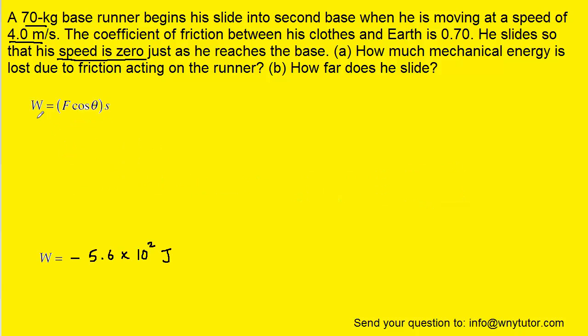For part B of the question, we can recall that the net work done on an object will equal the net force multiplied by the cosine of an angle, which we'll refer to momentarily, and then multiplied by a particular distance.